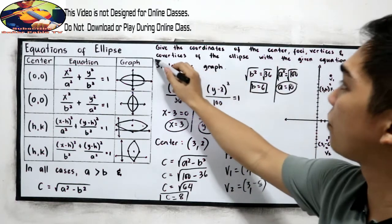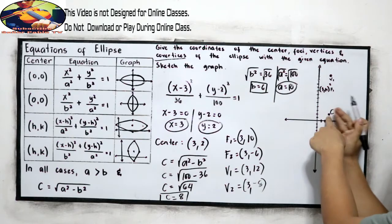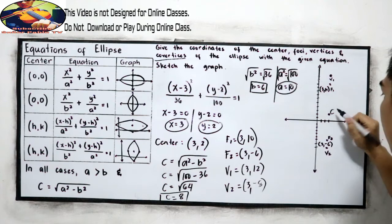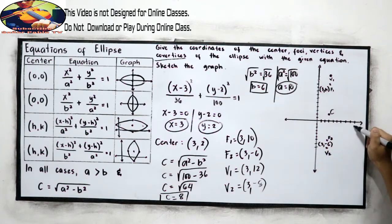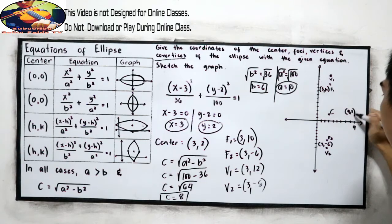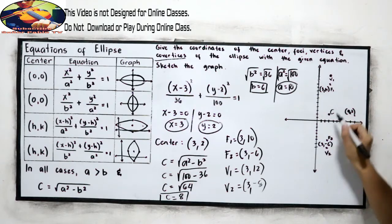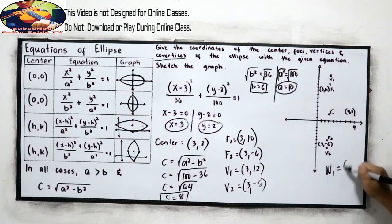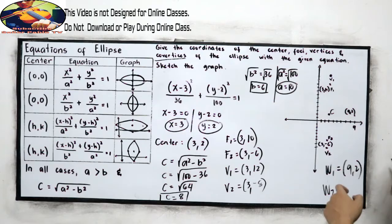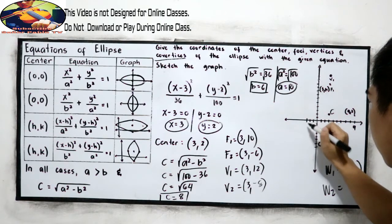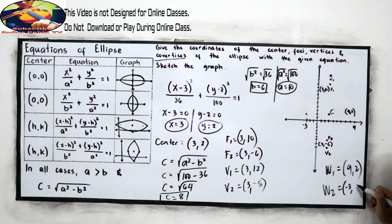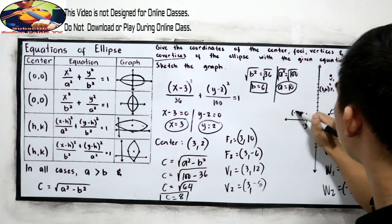Now let us find our co-vertices. The value of b is 6. From the center, 6 units to the right gives us (9, 2). And 6 units to the left gives us (negative 3, positive 2). So our two co-vertices are (9, 2) and (negative 3, 2).